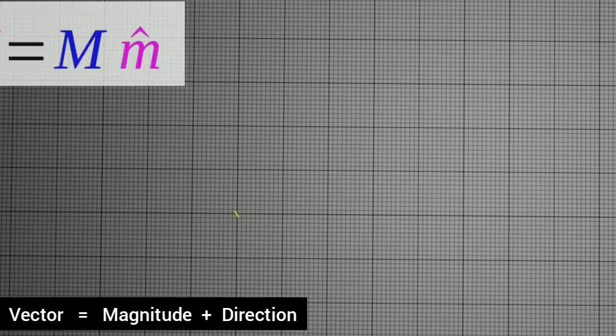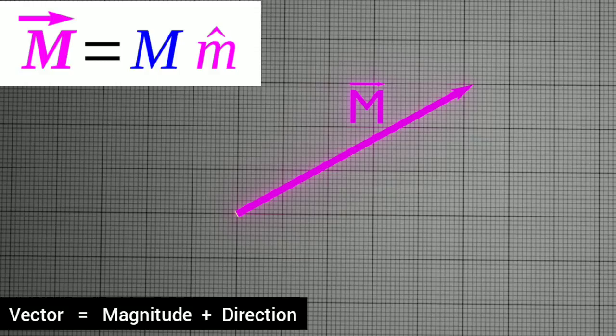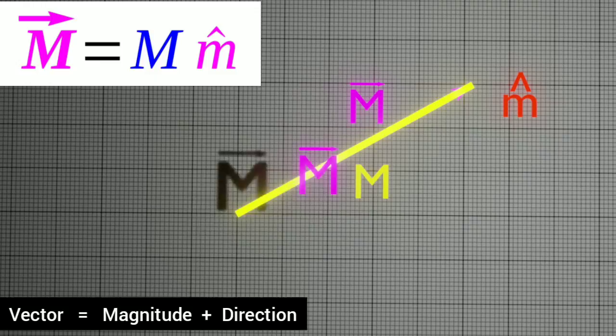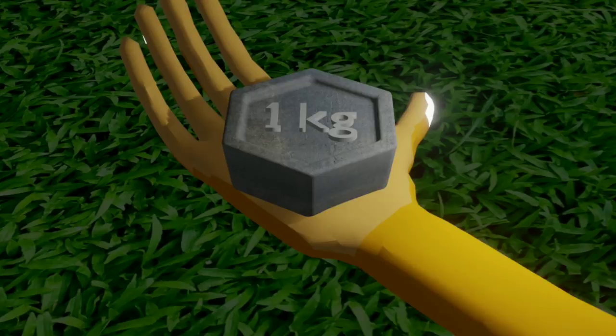You must be aware that any vector has two parts: magnitude and direction. On this page, this arrowhead M is a vector. Its value or magnitude is M, and cap M is its direction.